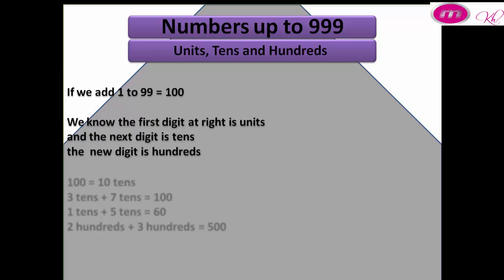We know the first digit at right is units, and the next digit is tens. The new digit is hundreds. You must know 100 equals 10 tens. That means 3 tens plus 7 tens equals 10 tens, which equals 100. 1 ten plus 5 tens equals 60. 200 plus 300 equals 500.